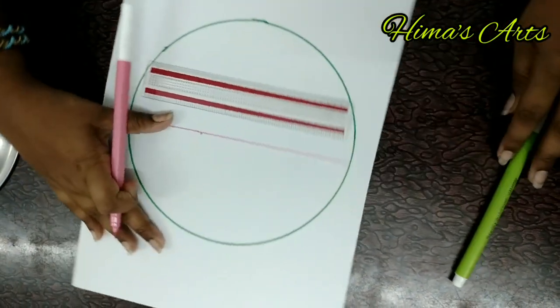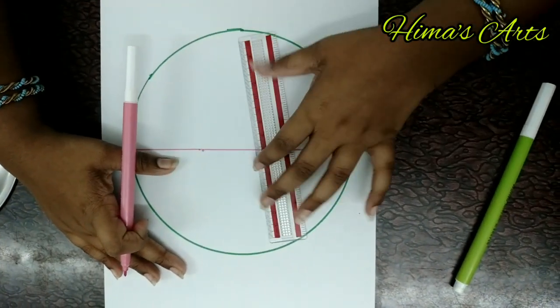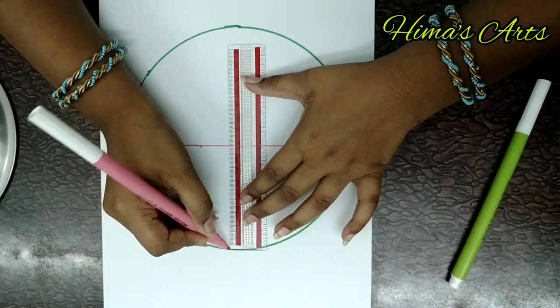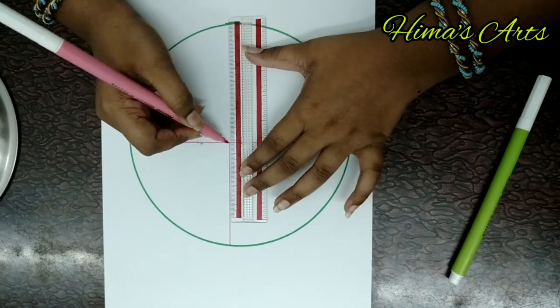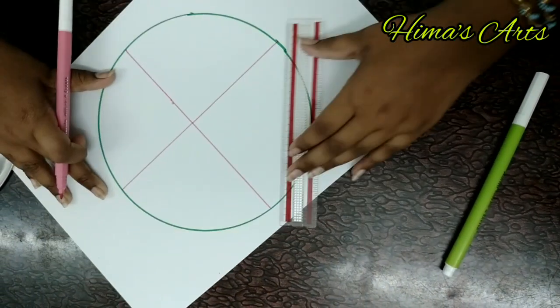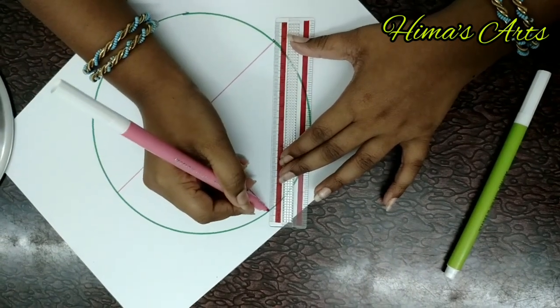It is very simple. Divide like this. Now we should join the two points.